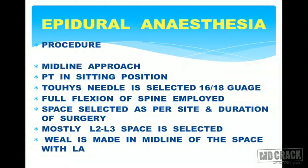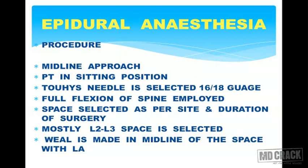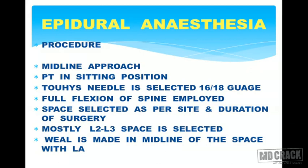For the procedure, there are two approaches: midline and paramedian. For the midline approach, the patient is in a sitting position on the operation table with a nurse or attendant supporting the back. The neck should be flexed and the back relaxed as much as possible. A Tuohy needle is selected — either 16 or 18 gauge — depending on the size of the patient. Full flexion of the spine is employed with the attendant's help.